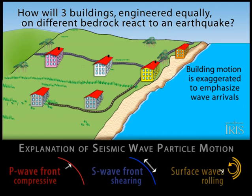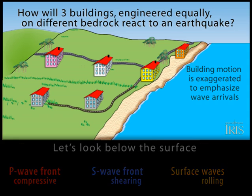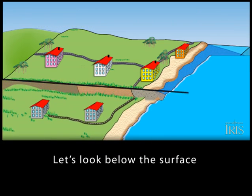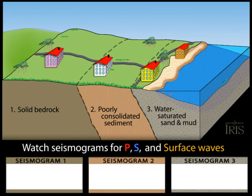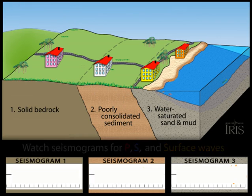The motion of similar buildings on different bedrock will be exaggerated to show the arrival of compressive P, shearing S, and rolling surface waves from a regional earthquake. Three consecutive seismograms will show the changing frequency and amplitude resulting from the change in rock type.